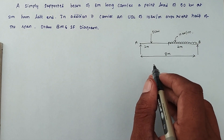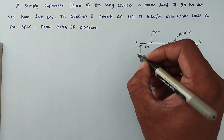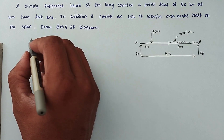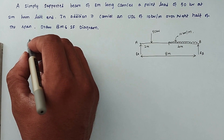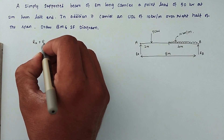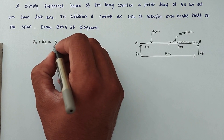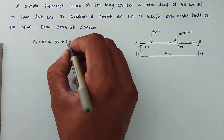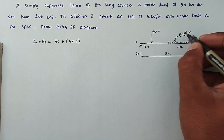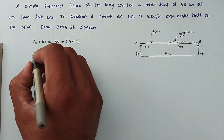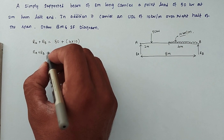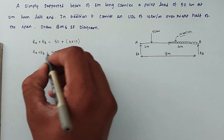We have to find reactions RA and RB. From equilibrium, the sum of upward forces equals the sum of downward forces. So RA plus RB equals 50 kN (point load) plus 4 into 10 kN (UDL), giving RA plus RB equal to 90 kN.